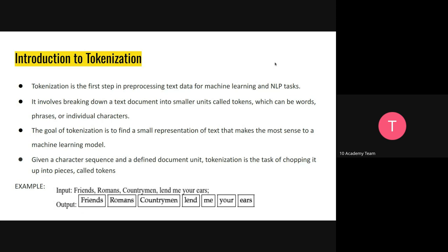The goal of tokenization is to find a small representation for our text data. For example, if you have a sentence and you tokenize it, it depends on what tokenization you're using. In this case it's word tokenization, so the tokenizer is breaking down the sentence into words — the words become their own tokens.